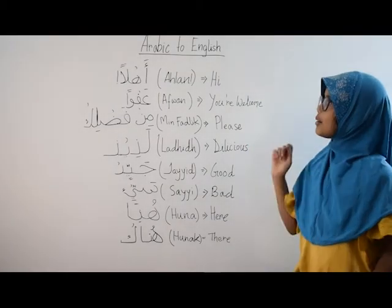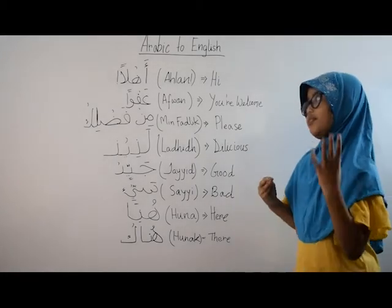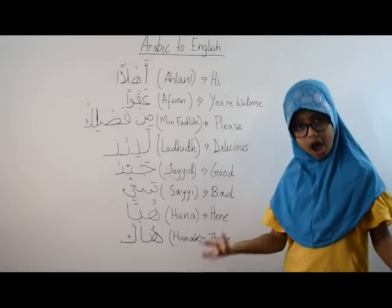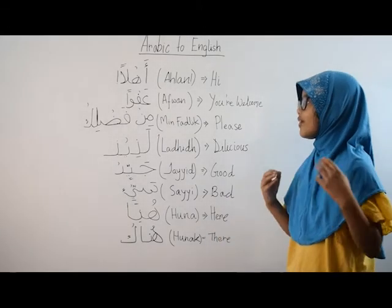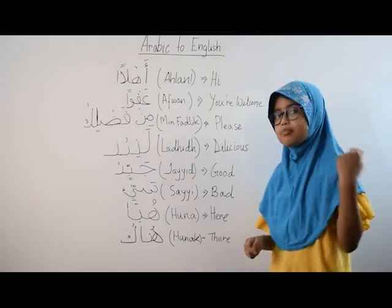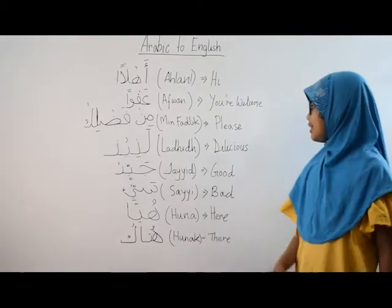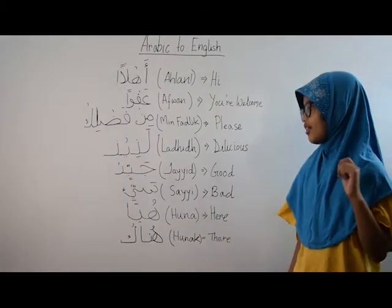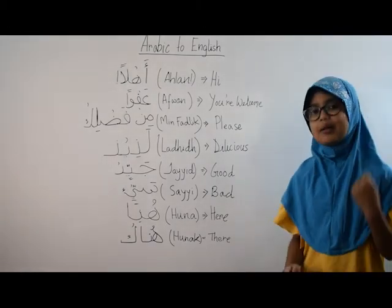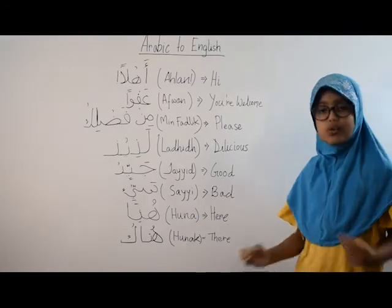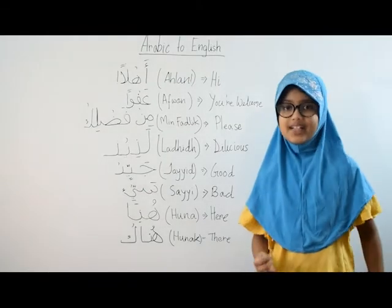Now let's review what we've learned today. The first word was 'ahlan', meaning 'hi'. The second word was 'afwan', meaning 'you're welcome'. The third word was 'min fadlik', meaning 'please'. The fourth word was 'lazeez', meaning 'delicious'. The fifth word was 'jayeed', meaning 'good'. The sixth word was 'sayyee', meaning 'bad'. The seventh word was 'khuna', meaning 'here', and the last word was 'khuna', meaning 'there'.